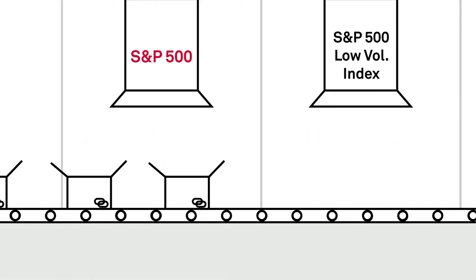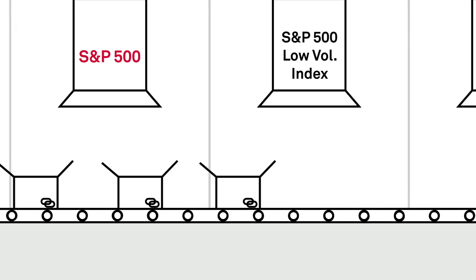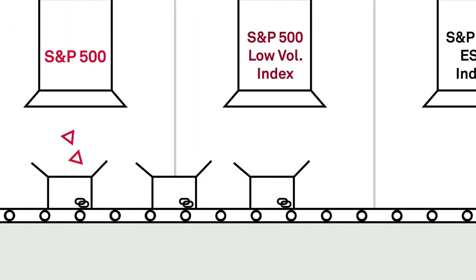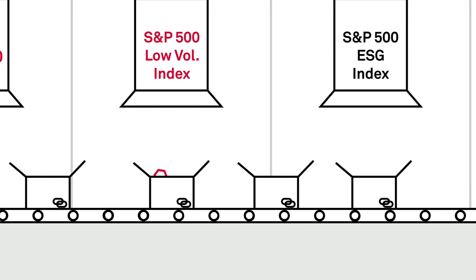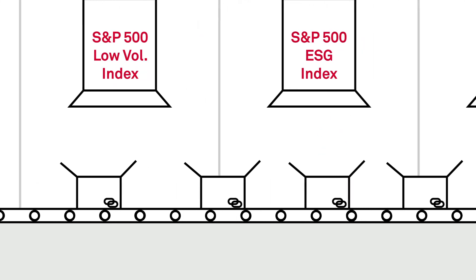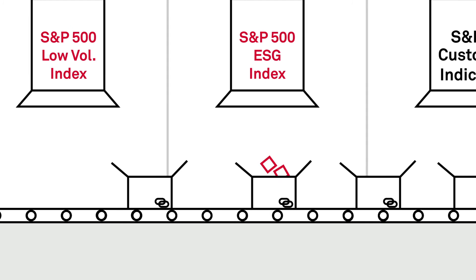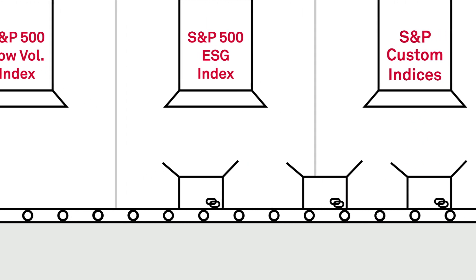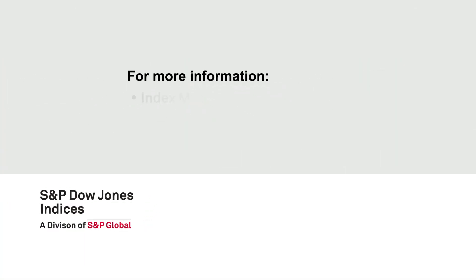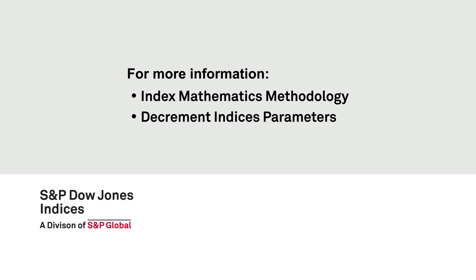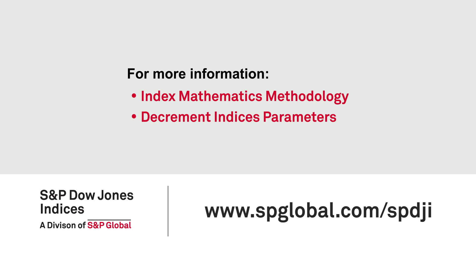Since no two markets are alike, S&P Dow Jones Indices provides a wide range of choices for decrement index construction and deduction calculation methods. In fact, any of our standard or custom indices can serve as a base index, and all decrement parameters can be customized based on market participant and issuer requirements. For a closer look at S&P DJI's current range of fee and decrement index solutions, including the latest index mathematics methodology and decrement index parameters, visit us at www.spglobal.com/SPDJI.